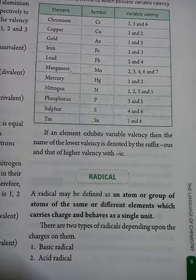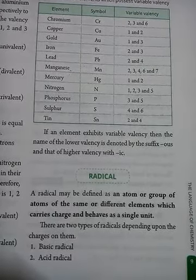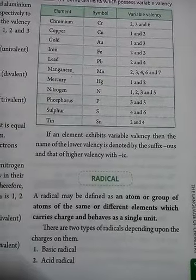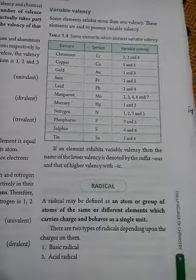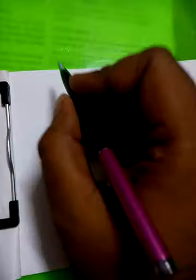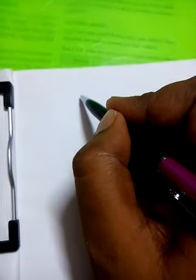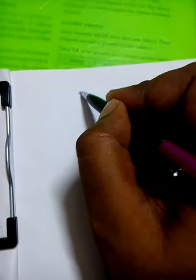There are two types of radicals: one is basic radical, another is acidic radical. Radicals are the charged species.